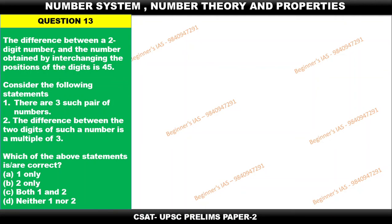Hello aspirants, welcome you all. Let us discuss number system based question, question number 13. The difference between a two-digit number and the number obtained by interchanging the position of the digits is 45.